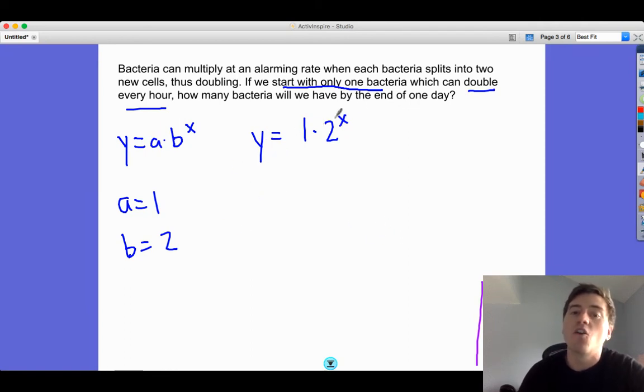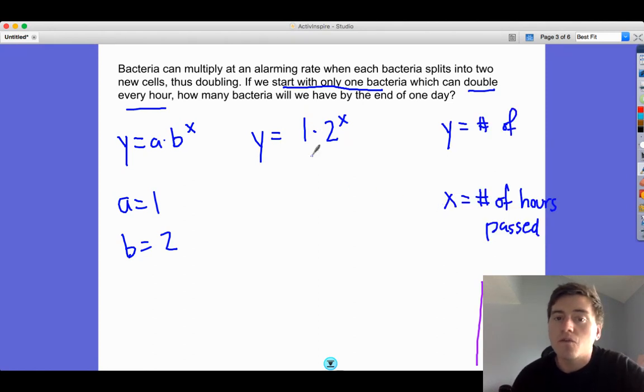We have to say what is x and y. We started with one bacteria, doubling every hour. x is the number of hours that have passed. If we start with one and double every hour, that'll give us how many bacteria we have. y is the number of bacteria.